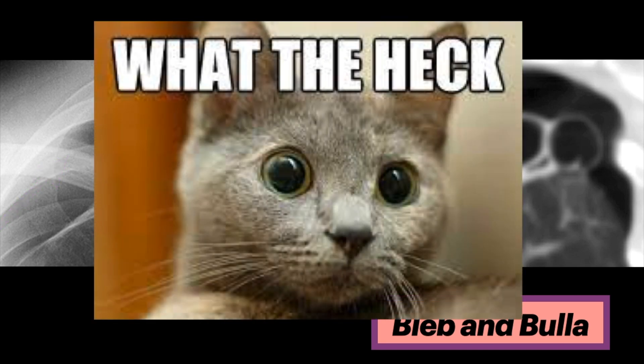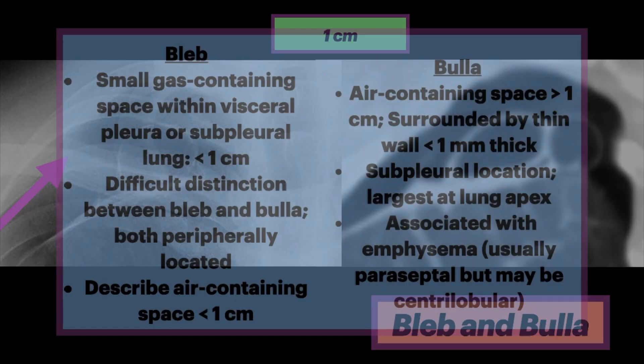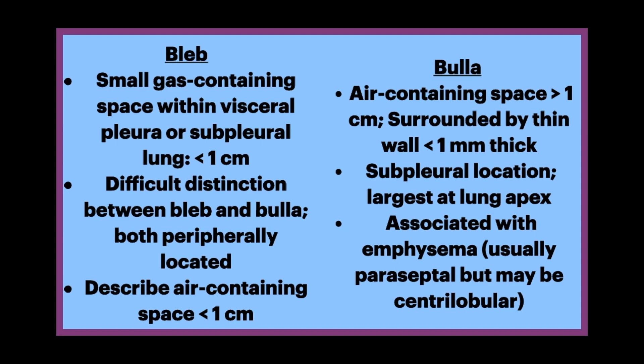What are blebs and bullae? Bullae and blebs are generally indistinguishable from each other on imaging; however, some distinguish based on size, and that's arbitrarily one centimeter. A bleb is a small gas-containing space within the visceral pleura or in the subpleural lung, not larger than one centimeter in diameter.